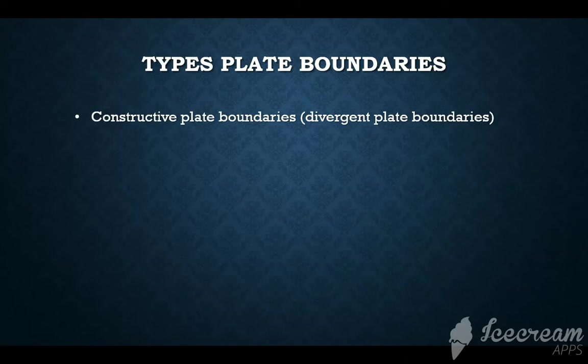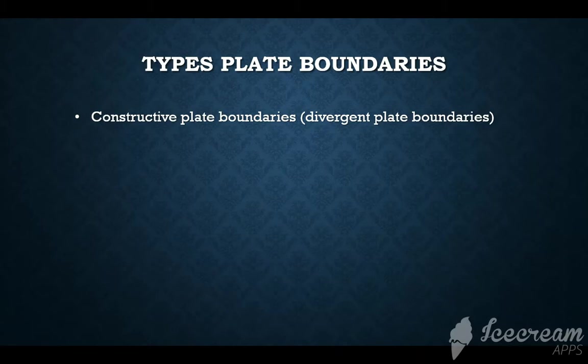With tectonic plates, we tend to talk about plate boundaries. Plate boundaries refer to the Earth's crust divided into giant pieces known as tectonic plates. These giant pieces are constantly or gradually moving. The cause of this movement is as a result of convection currents underlying the Earth's crust. We will talk about convection currents later on.